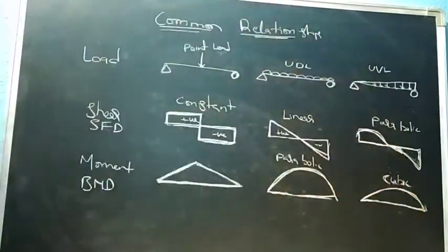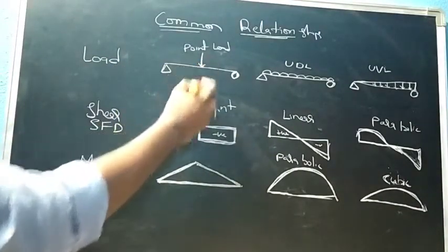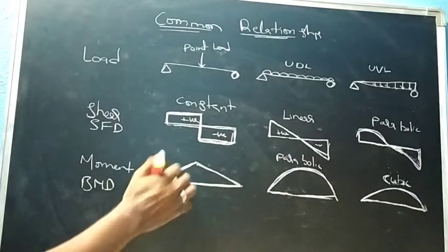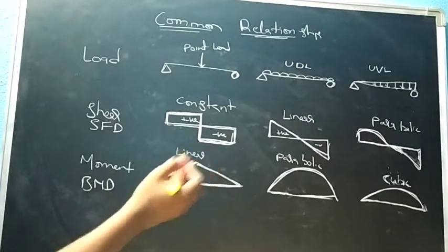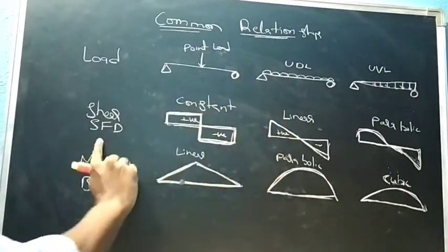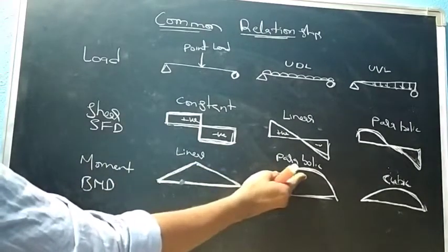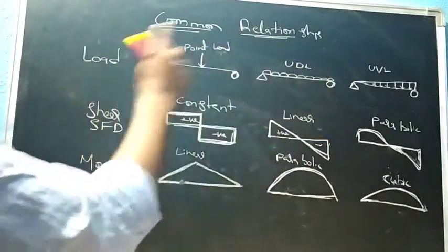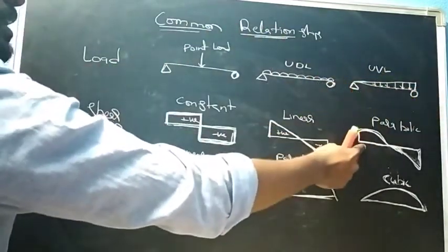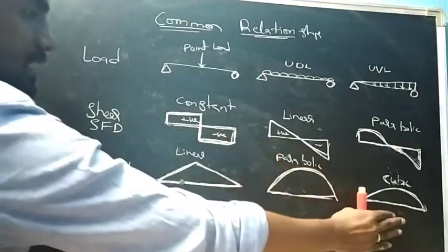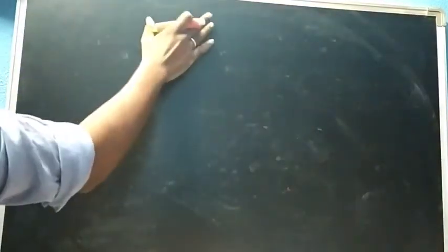To summarize: for a point load, the shear force is constant and the bending moment is triangular (linear). For UDL, shear force is linear and bending moment is parabolic. For uniformly varying load, shear force is parabolic and bending moment is cubic. Next, we will see the SFD and BMD for a simply supported beam with a point load.